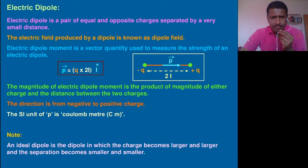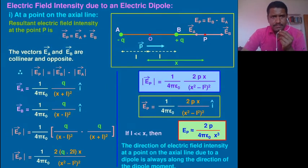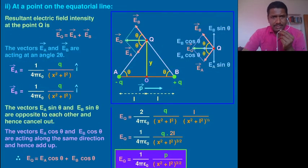Electric field intensity due to an electric dipole—at a point there are so many points covered under the electric field intensity due to an electric dipole. First is at a point on the axial line, another one is at a point on the equatorial line. Here is equatorial line shown here.